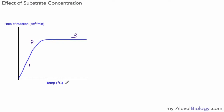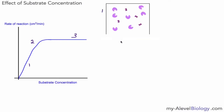The third factor is the effect of substrate concentration on the rate of an enzyme-controlled reaction. As we increase substrate concentration, the rate of the reaction gets higher and higher until we reach a certain level where it flattens out — no matter how much more substrate we add, the rate of reaction doesn't get any quicker.